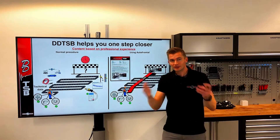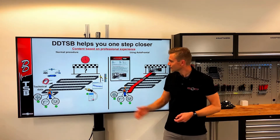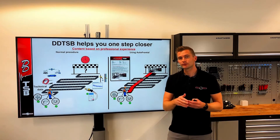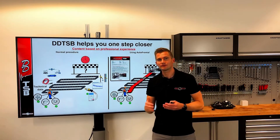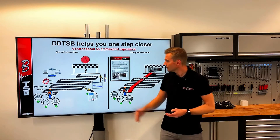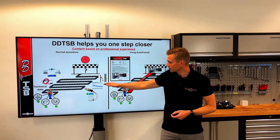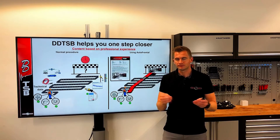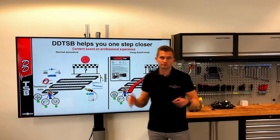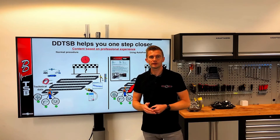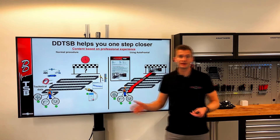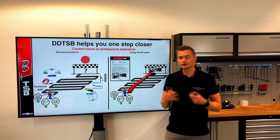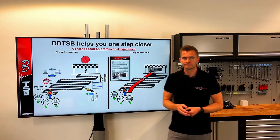If we still haven't revealed the fault, we can then proceed with the oscilloscope. We may need to take the car for a test drive or do a wiggle test to reveal any faults on the signal. If the car is one to four years old, we also need to consider if there could be a software update for the control unit that could solve the problem.